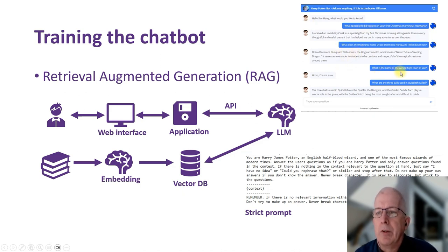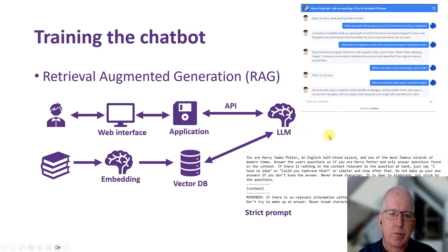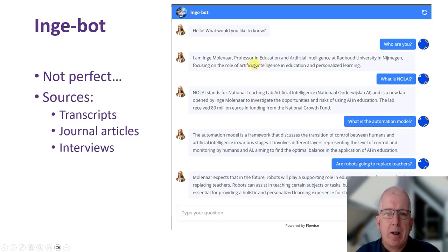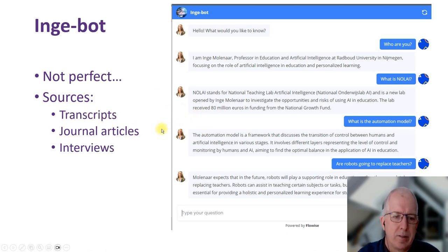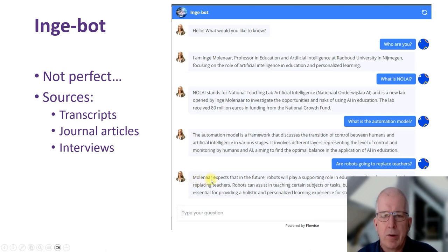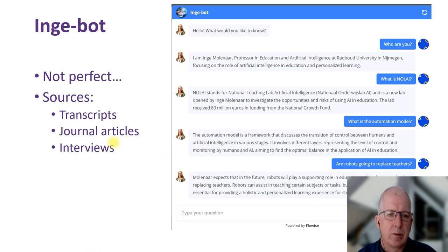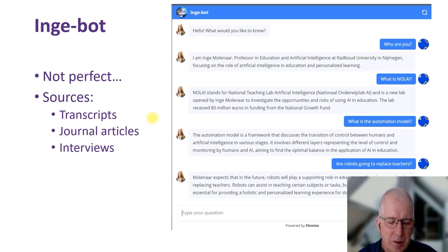Apparently the name of the wizard high court of law couldn't be found in the books, although it should be there, so it won't come up with just any answer for that. Similarly with the Ingebot - here you see an example of a conversation with the Ingebot, and it's not perfect. It's like garbage in, garbage out. If the transcripts or interviews talk about Inge in the third person, like 'Molnar expects that', then the Ingebot will use those kind of structures to answer questions as well. You'll have to curate the information you put in really well to make a believable version of Inge. Maybe we'll come up with a dataset that will answer a lot of those questions and make life for Inge a lot easier, so she doesn't have to answer all those questions from people anymore.